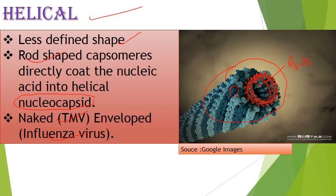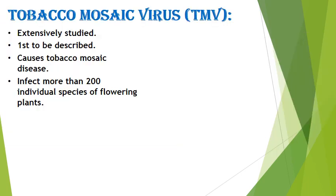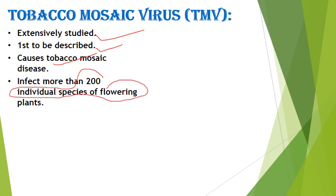Tobacco mosaic virus (TMV) is the most extensively studied virus and the first virus to be described. It causes tobacco mosaic disease in tobacco plants and can infect more than 200 individual species of flowering plants, giving it a very broad range of infection.